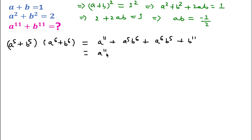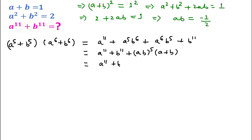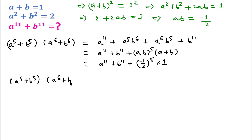So we can write this as a to the power 11 plus b to the power 11. Moving the remaining terms, we take a to the power 5 and b to the power 5 common, giving ab to the power 5 times a plus b. Putting in the values — ab equals minus 1 over 2 to the power 5 — and a plus b is 1, we get a to the power 5 plus b to the power 5 times a to the power 6 plus b to the power 6, equal to a to the power 11 plus b to the power 11 minus 1 over 32.